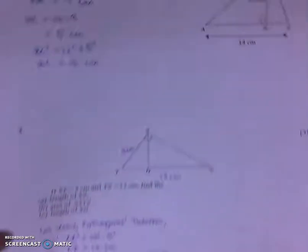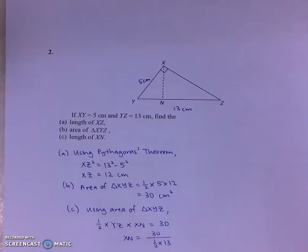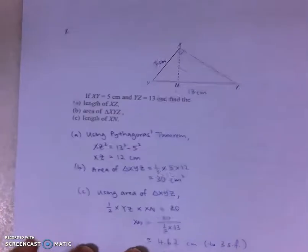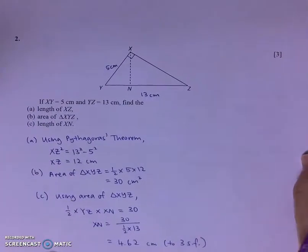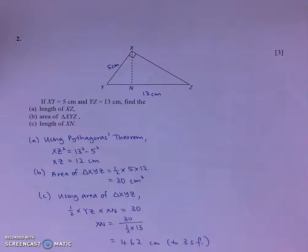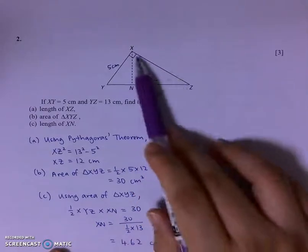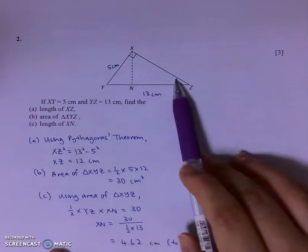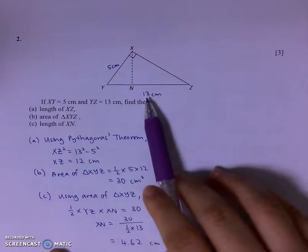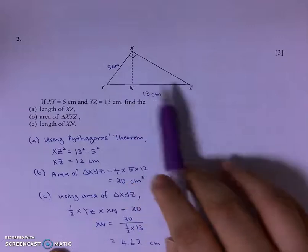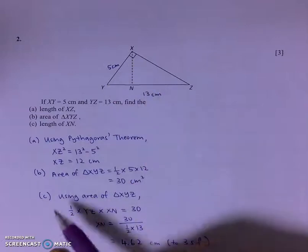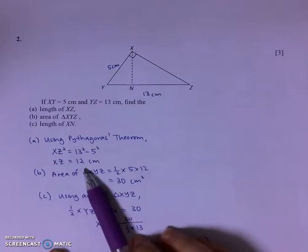For question number 2, the question wants us to find the length of XZ, which is one of the shorter sides of a right-angled triangle. They've given us the length of the hypotenuse and one of the shorter sides, so we can easily find the length of XZ.